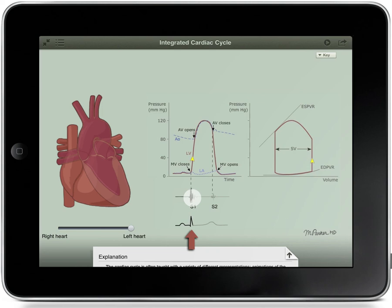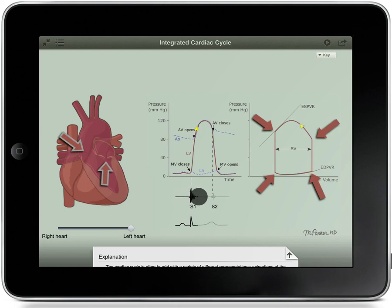The PV loop or pressure volume loop on the right has no time axis. Its pressure axis is the same as for the Wiggers diagram. You can drag your finger along the time axis of the Wiggers diagram to see that each corner of the PV loop corresponds to the closing or opening of a heart valve.